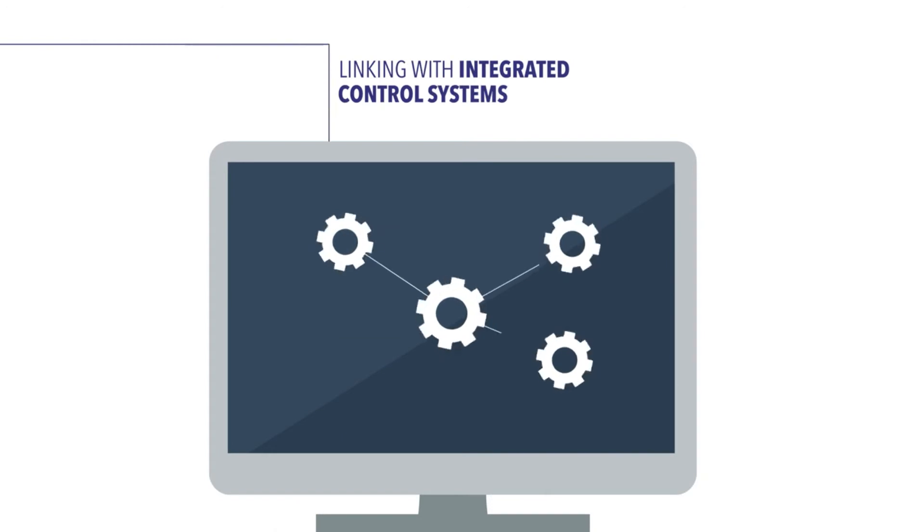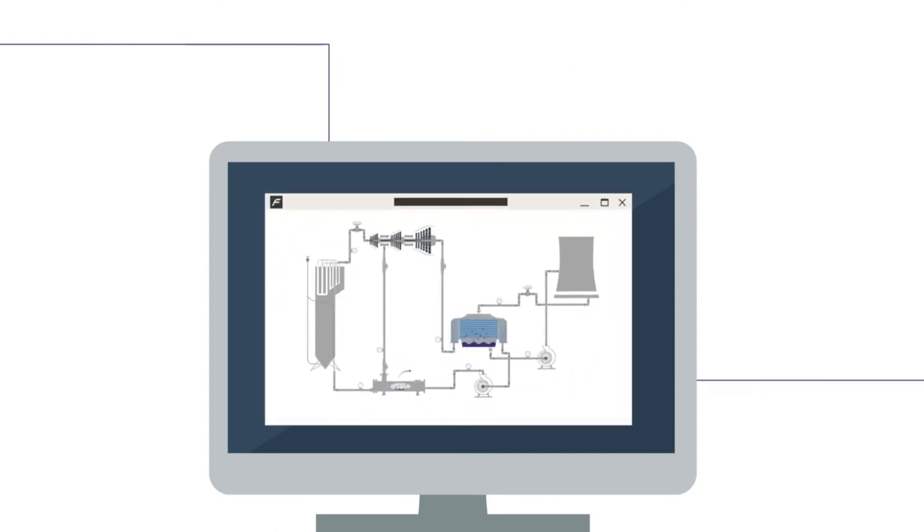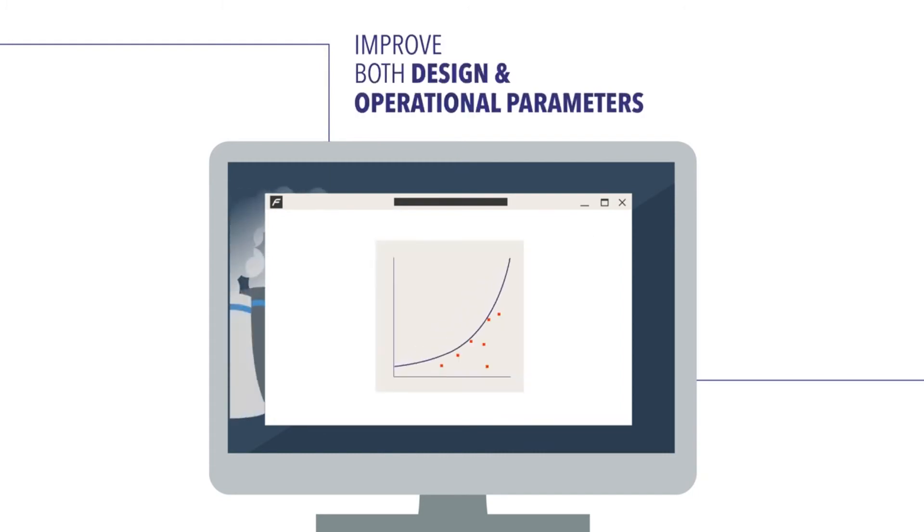By linking flow and heat transfer networks with integrated control systems made possible in Flownext, engineers can improve both design and operational parameters.